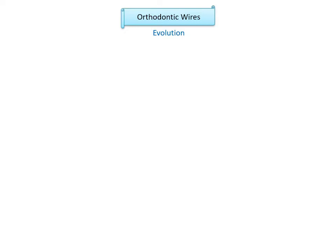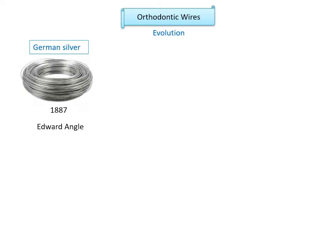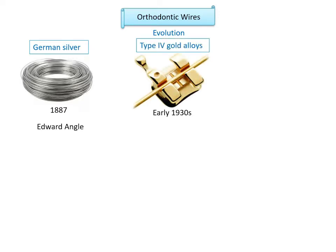Now let's take a look at the history of orthodontic wires and how they have evolved through the years. In 1887, the father of orthodontics Edward Angle tried replacing noble metals with German silver. Subsequently, as he kept experimenting with materials such as copper, nickel, and zinc alloys, his favorite material became 14–18 karat gold. Until the early 1930s, gold alloys comprised the most widely used material for wire manufacturing. Gold alloys are not used in routine orthodontic therapy anymore because they are expensive and not aesthetic. However, at times when patients are allergic to other metals, the use of gold is considered owing to its biocompatibility.